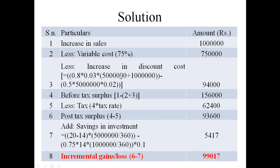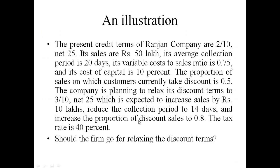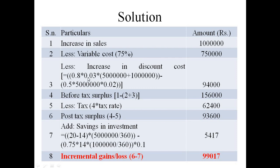Total sales after the change is Rs. 60 lakhs. The net increase in discount cost is Rs. 94,000. Before-tax surplus is computed from sales less variable cost and discount cost — all on a before-tax basis. Then we apply the tax rate of 40% to get the post-tax surplus.